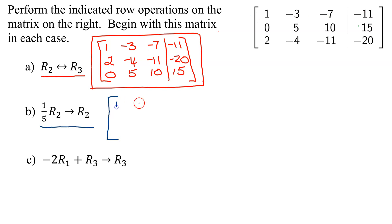This is going to be my row 1: 1, negative 3, negative 7, and negative 11.